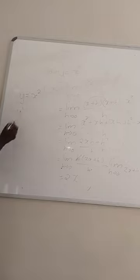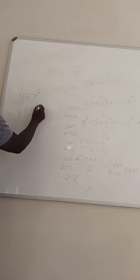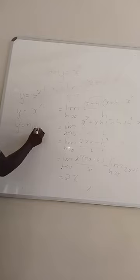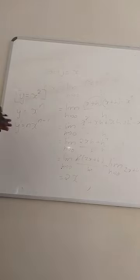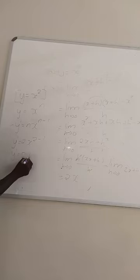Now there is a power rule: if y equals x to the power n, then y prime equals n times x to the power (n minus 1). So if y equals x squared, y prime equals 2 times x to the power (2 minus 1), which equals 2x — exactly the same answer we got using the first principle.